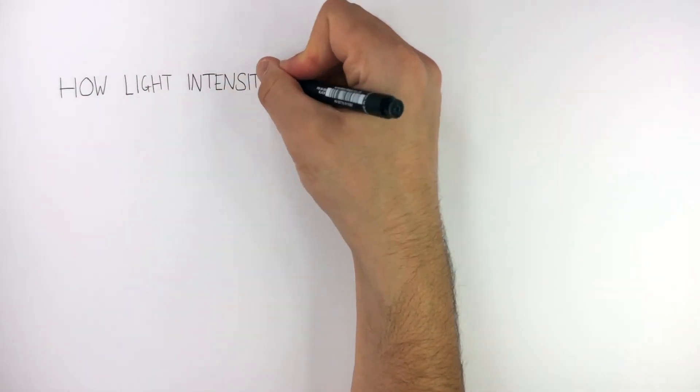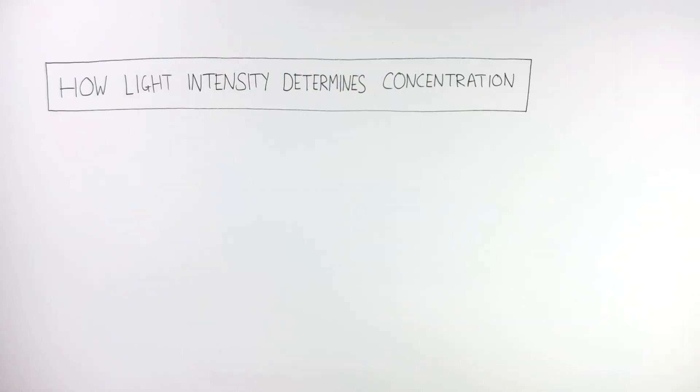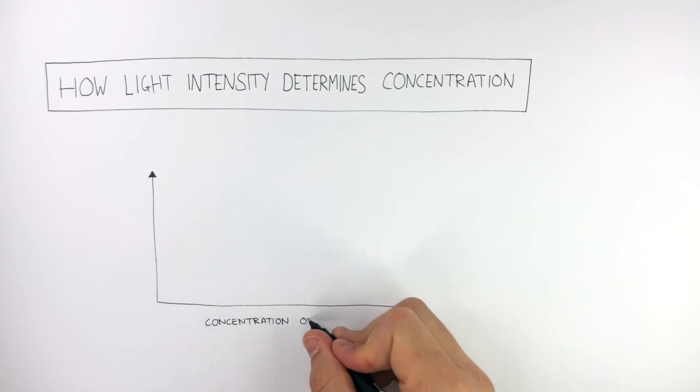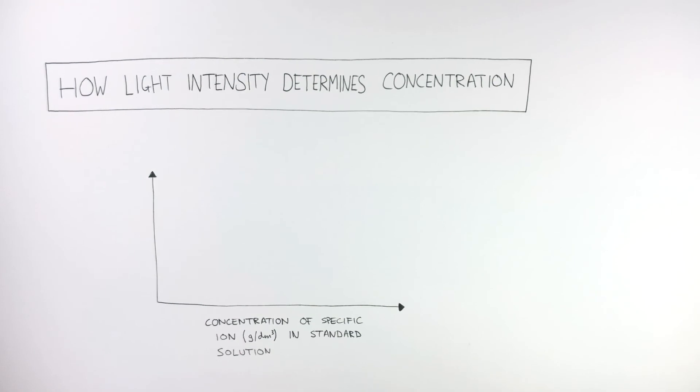How light intensity determines concentration. This graph has concentration of specific ion in grams per decimeter cubed in standard solution on the x-axis and light intensity on the y-axis. This is a calibration curve of a specific metal ion found in standard solution.